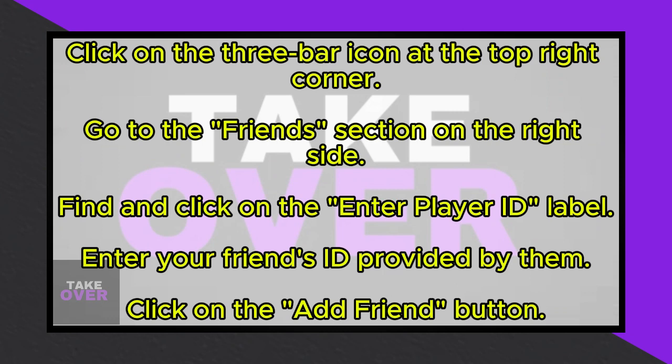Once you've accessed the Friends section, look for the Enter Player ID label on the left side of the interface. Click on this label. Regardless of whether you're using an iPhone or an Android device, this process remains the same.